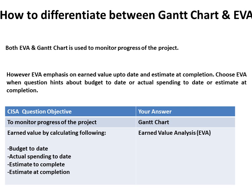Both Gantt chart and EVA are used to monitor project progress, but EVA specifically emphasizes earned value up to date and estimated completion. Choose EVA when the question hints about budget to date, actual spending to date, or estimated completion. If the objective is simply to monitor project progress, the answer is Gantt chart; however, if any of those specific financial/completion metrics appear, the answer should be Earned Value Analysis.